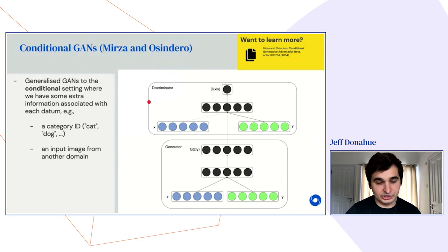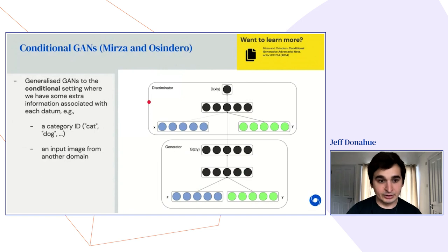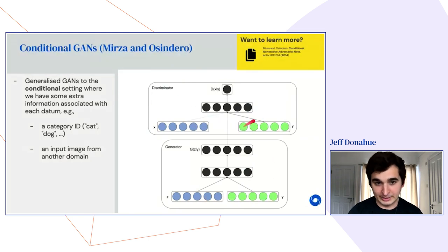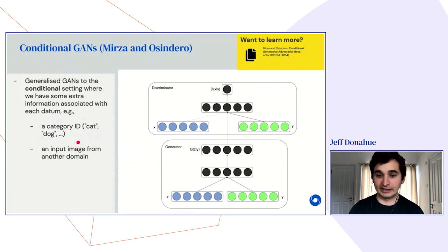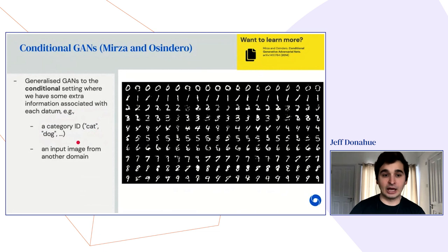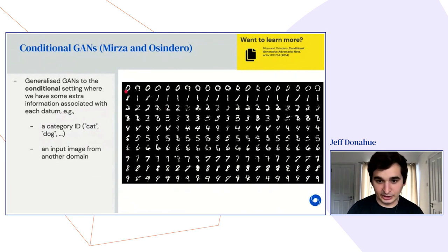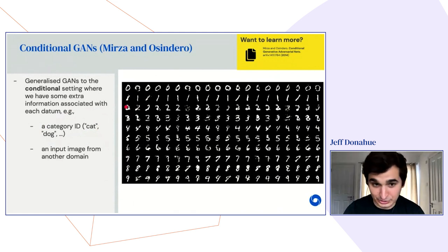An early extension was Conditional GANs, which generalize GANs to settings where extra information is associated with each data point — such as a category label. Instead of just generating freely, the model is conditioned on a class label like cat or dog. Applied to MNIST with 10 digit labels, each row conditioned on a different digit label produces outputs that look like the correct digit, showing the conditioning works.